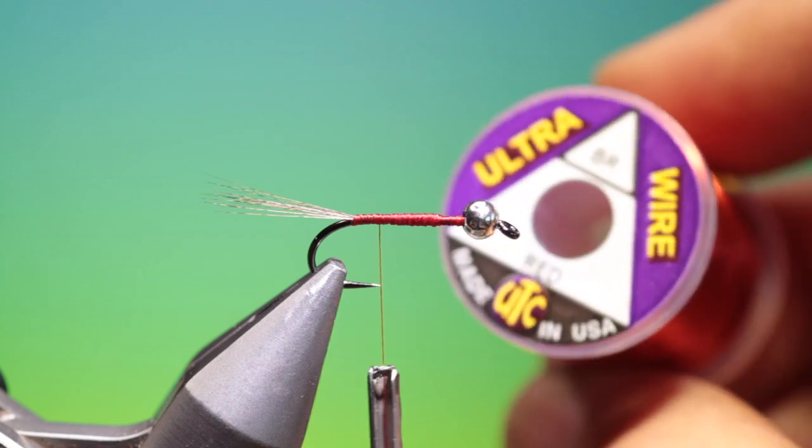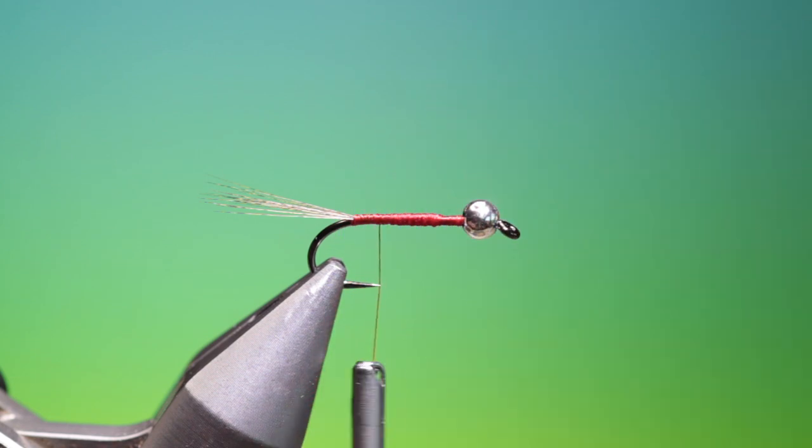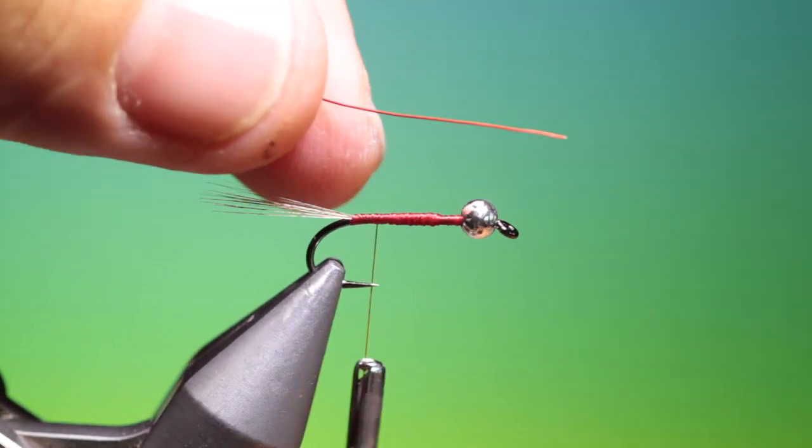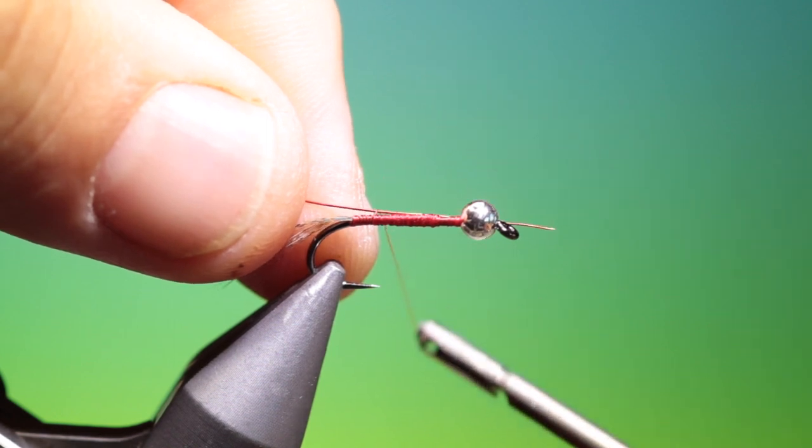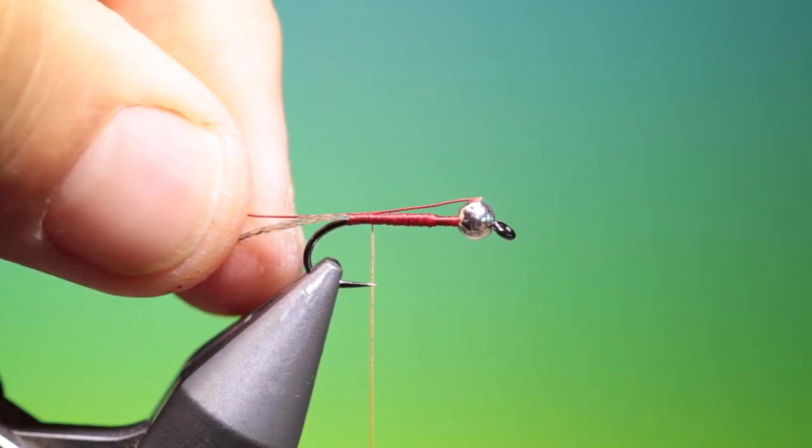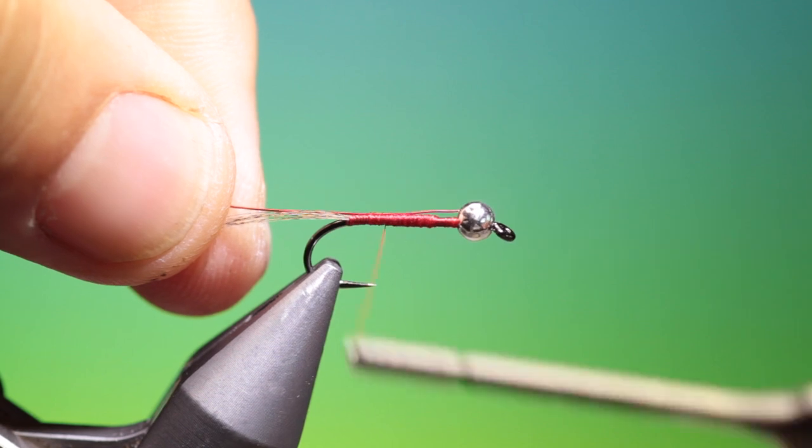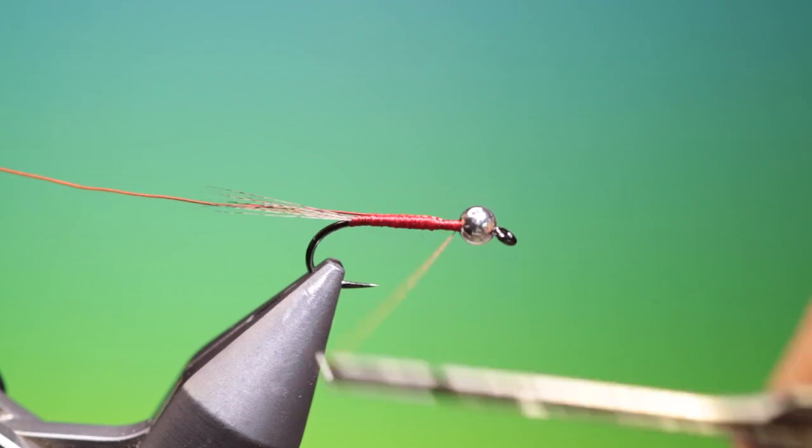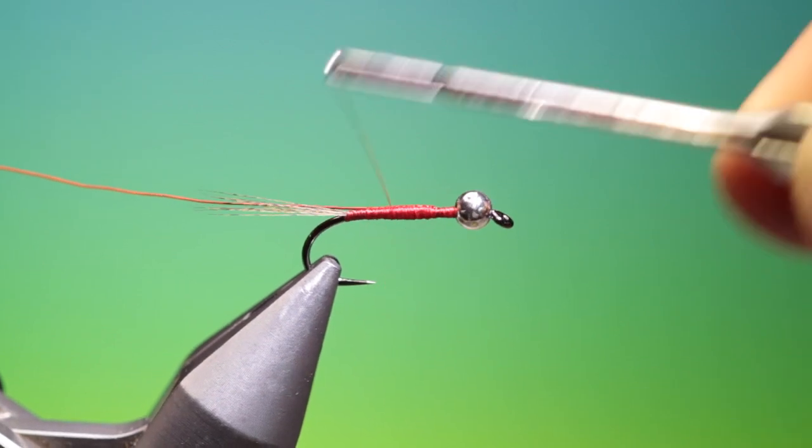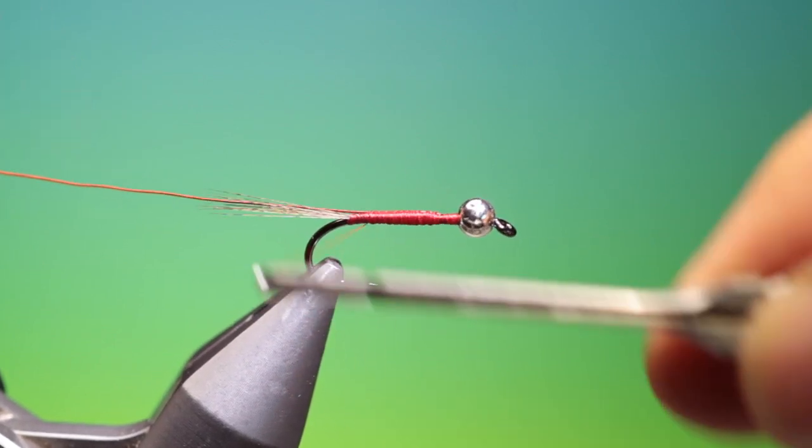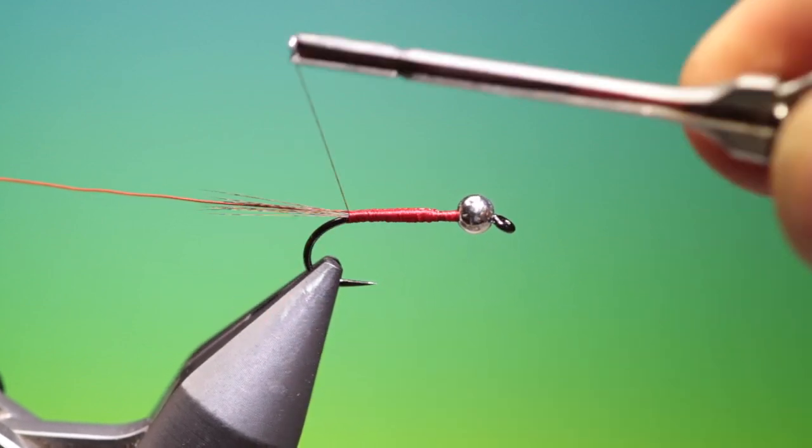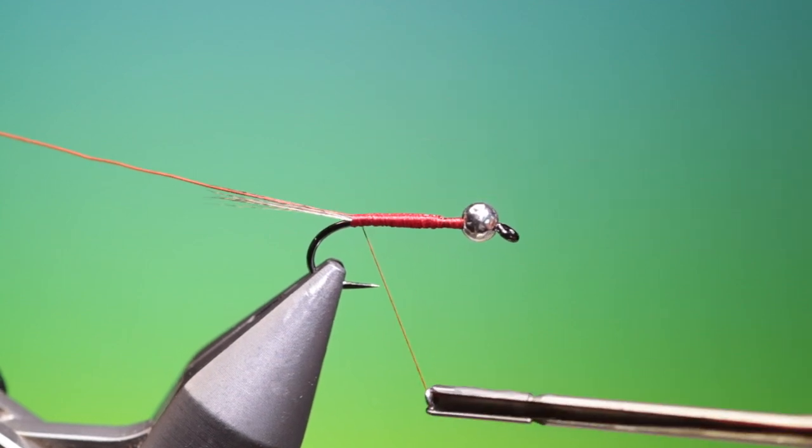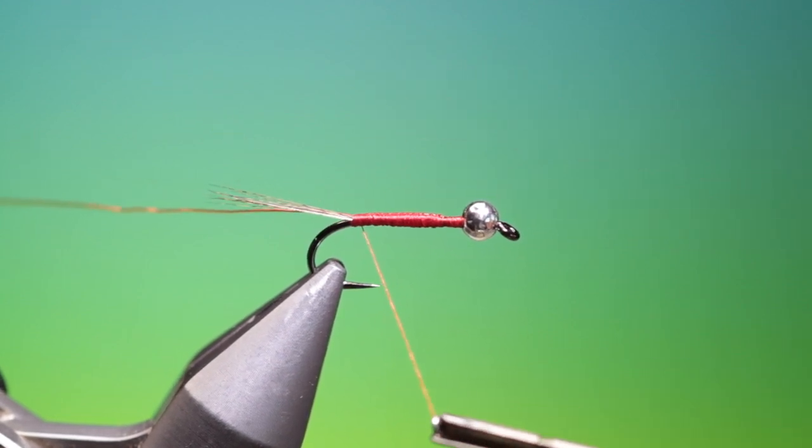So now I'm using some UTC Bright Red wire for the rib. I'll just tie this on the rear of the hook. And then back down, we want this nice and tight right into the tail base where we'll make our first turn of rib.